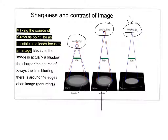Because the image is actually a shadow. When you put your image here and there's your x-ray source, the shadow is formed. The sharper the source of x-rays, the less blurring there is around the edges of the image. So that's going to increase the sharpness of your picture.